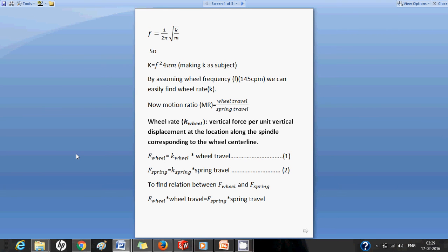Now in this equation m is the mass of the vehicle on the wheel which is being calculated, for which we are calculating the frequency. F is my frequency which is unknown, and k is my wheel rate which is unknown. So we have to assume something. So we start with an assumption of a wheel frequency to be approximately 145 cycles per minute. So with that we can find wheel rate.